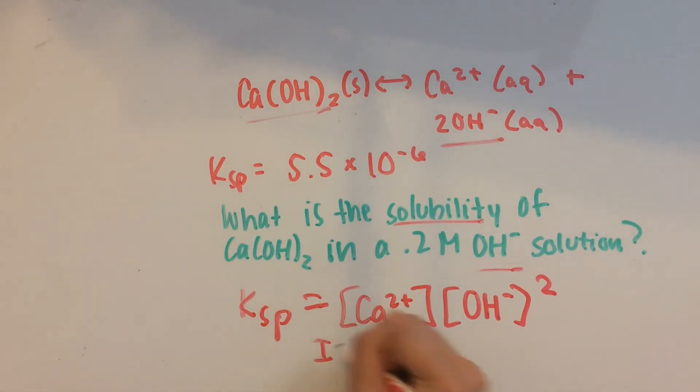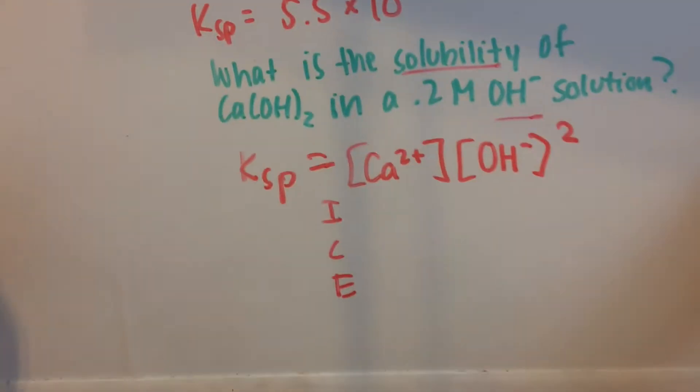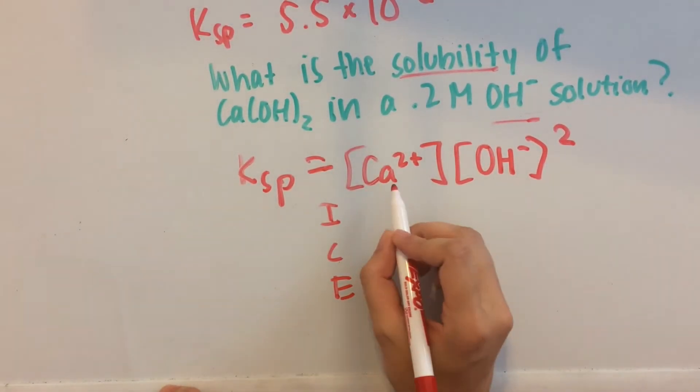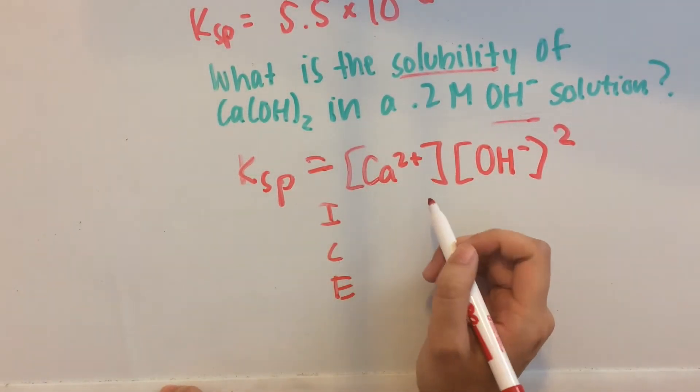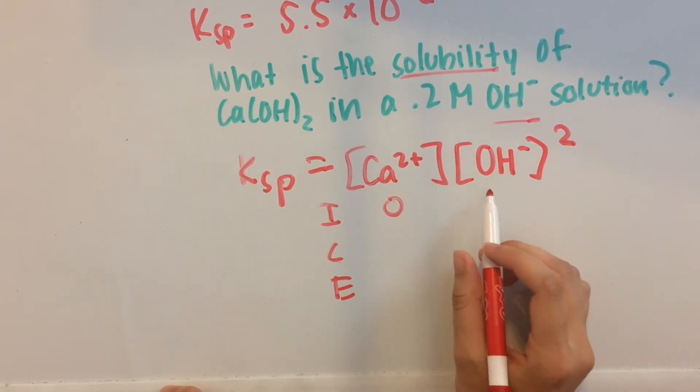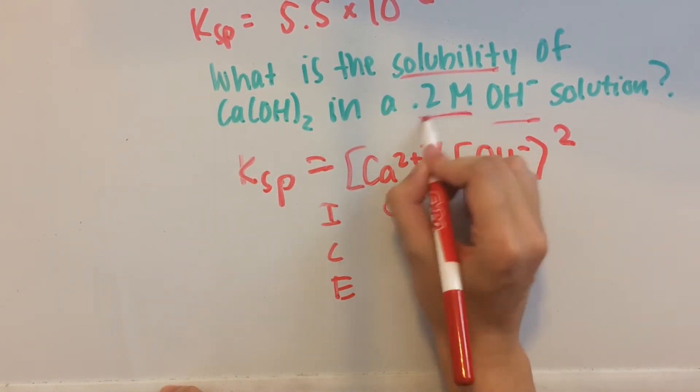What we can do is set up an ICE chart. I stands for initial, C stands for change, and E stands for equilibrium. So we're going to have initial Ca²⁺ which is 0, but the initial OH⁻ is 0.2.